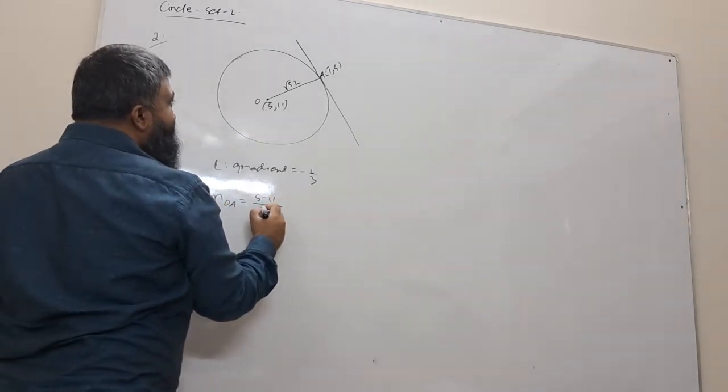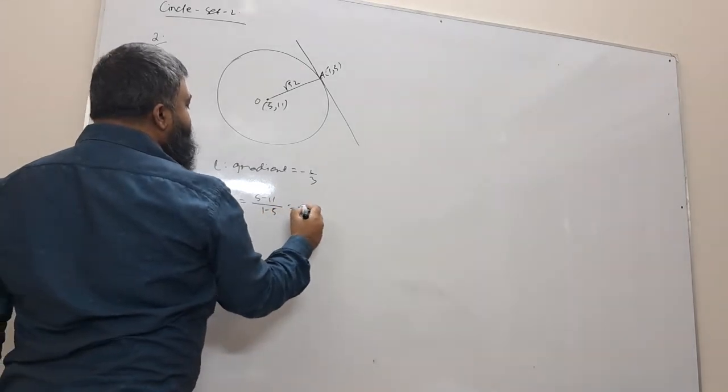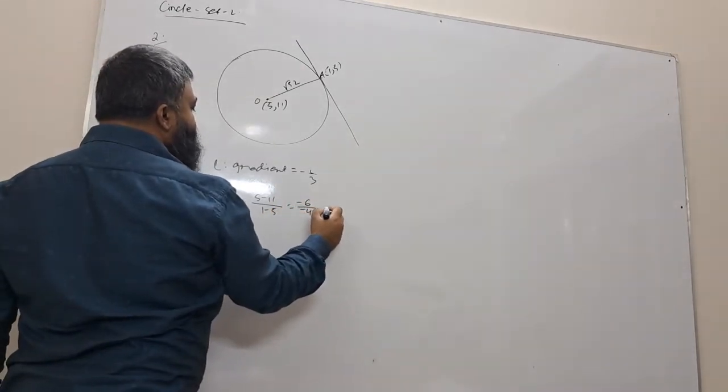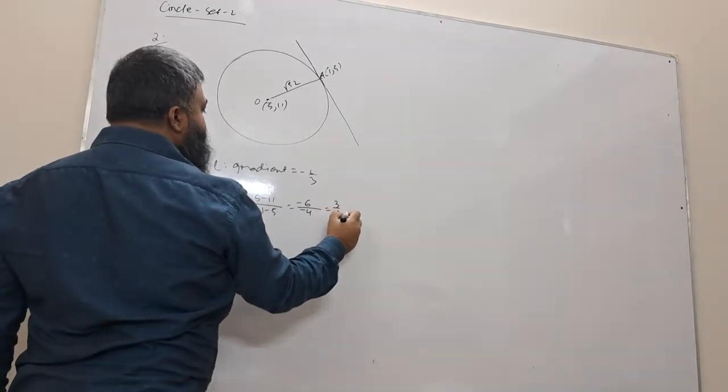5 minus 11, 1 minus 5. 5 minus 11, minus 6. That means 1 minus 5, minus 4. 3 by 2. That means it is a gradient, 3 by 2.